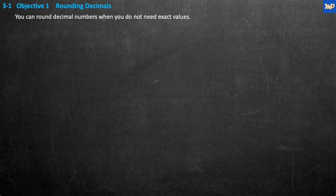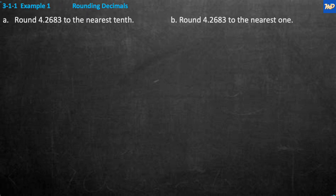Okay. Objective one: rounding decimals. They tell us here: you can round decimal numbers when you do not need an exact value. Example one: rounding decimals.